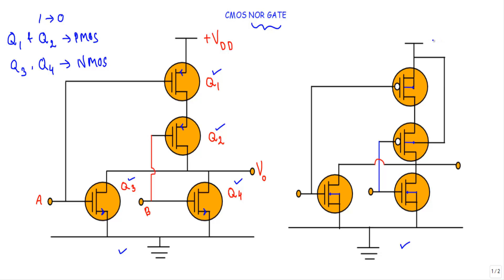Here we have the bias voltage VDD. We are applying VDD at the source terminal of transistor Q1, and the drain terminal of transistor Q2 is connected to the common point of the drain terminals of transistors Q3 and Q4. The drain terminals of Q3 and Q4 are connected together, and we are taking the output from that common point.